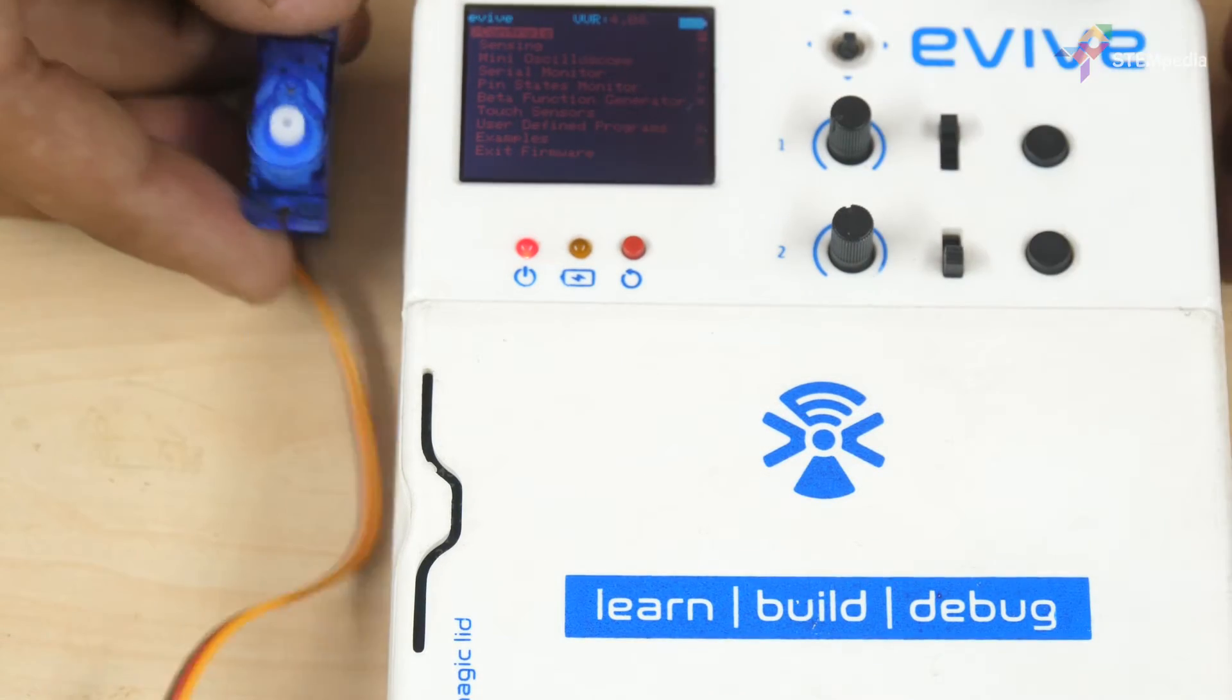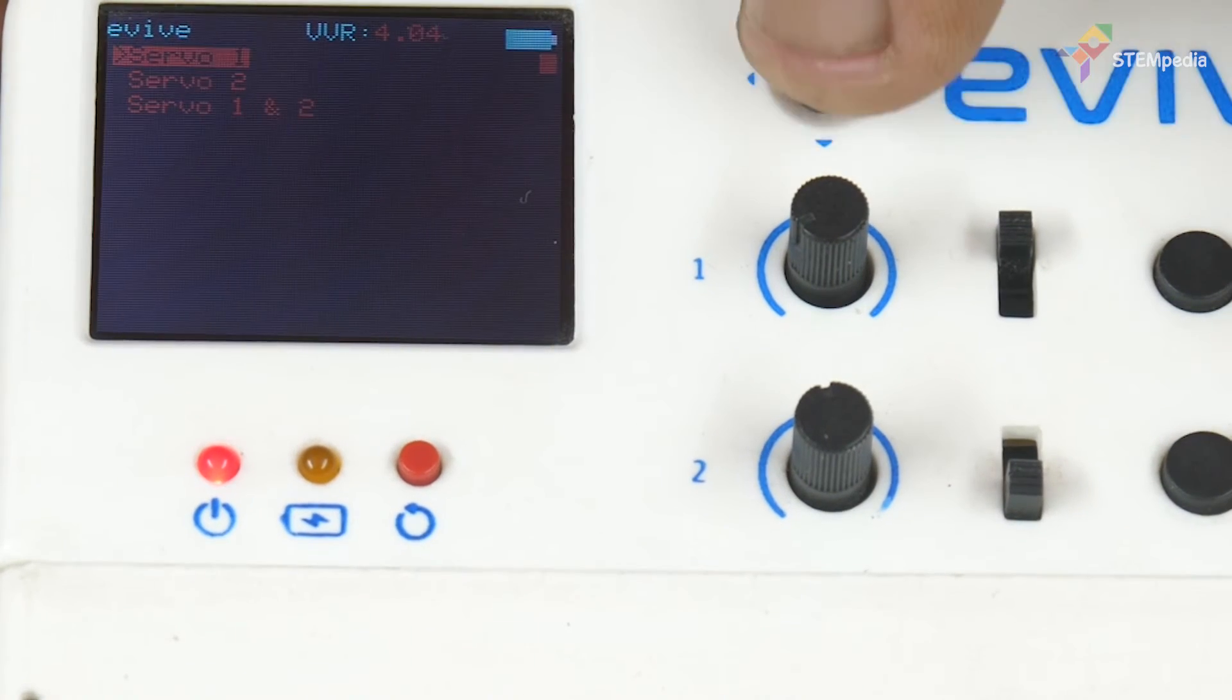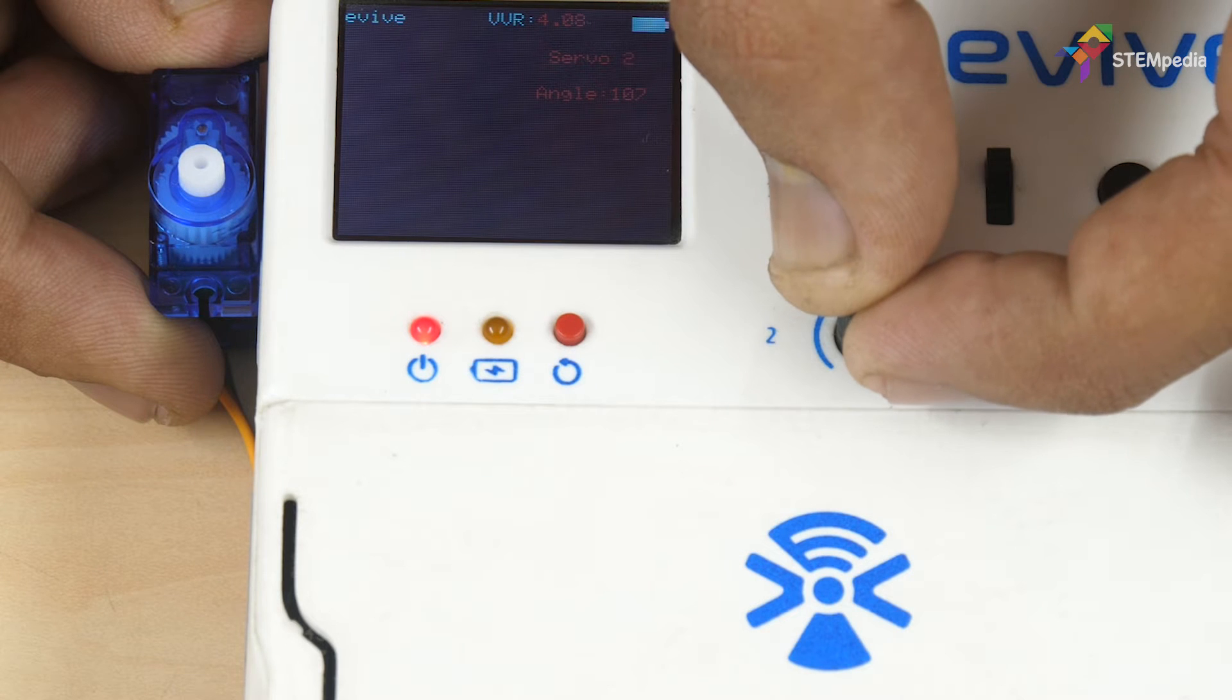Then switch it on and from the menu select controls, then servos, then servo 2. Set the servo angle to 90 degrees using potentiometer 2. And then disconnect it.